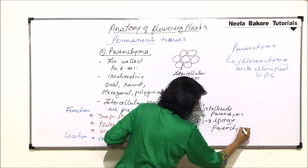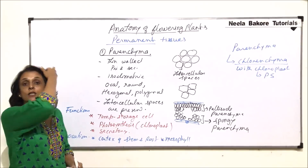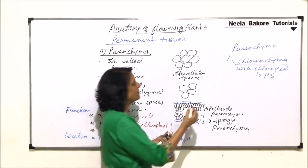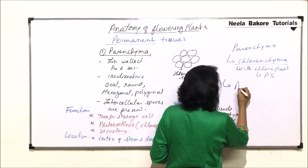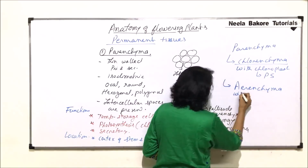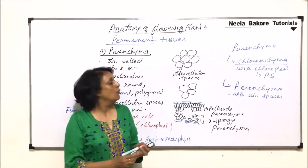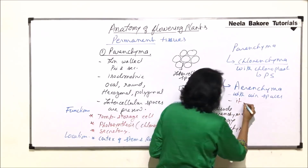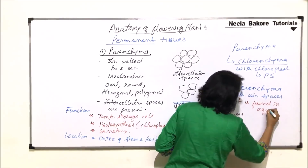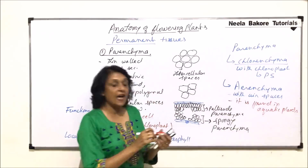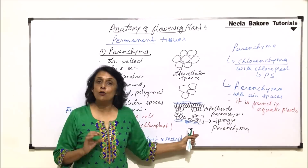This mesophyll parenchyma is with chloroplasts, so it is performing photosynthesis. The next type of parenchyma is with airspaces — that is known as aerenchyma. Aerenchyma has airspaces that help in providing buoyancy, helping the plant to float. That is why this particular type of parenchyma is found in aquatic plants, so that these plants are able to float.